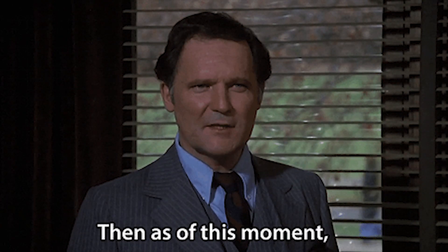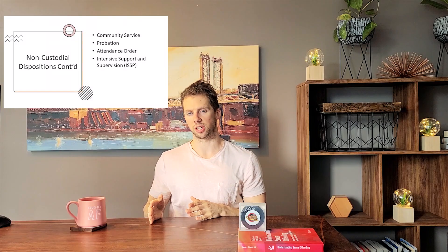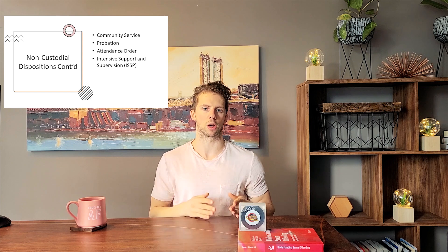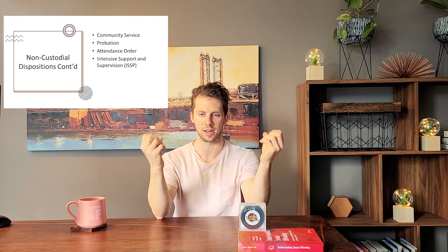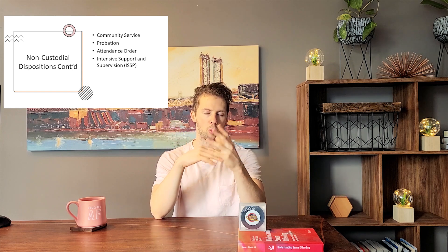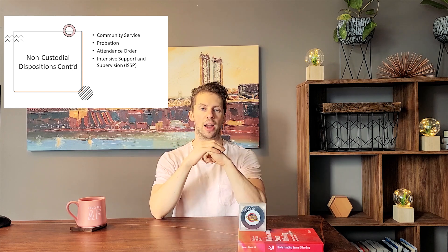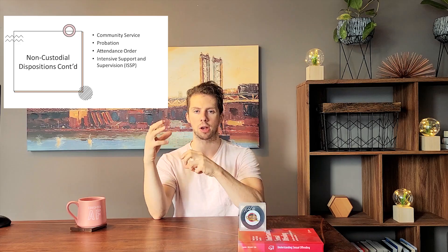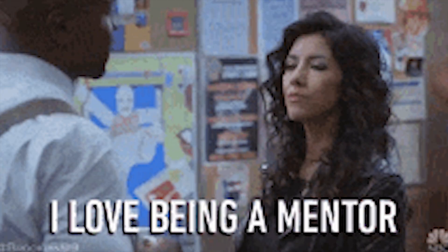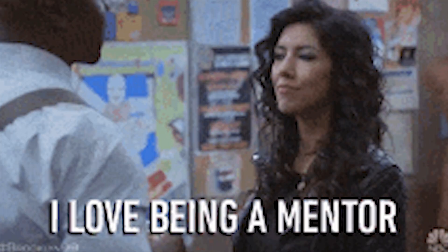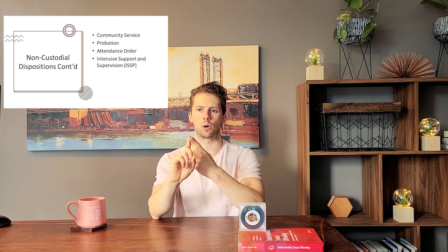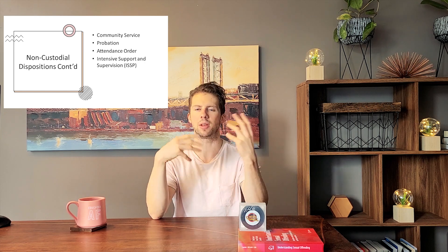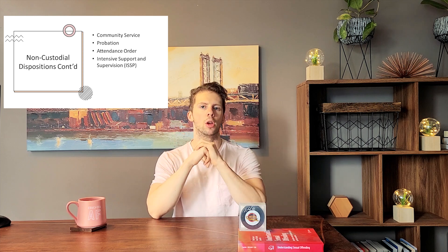The Intensive Support and Supervision Program, sometimes referred to as ISP, is kind of like probation on steroids. The individual is assigned a specific ISP worker who is not just there to administer conditions and remind youth of appointments, but also acts as a mentor — helping the young person hand out resumes, open a bank account, get a library card, and other things that support their pathway to rehabilitation.